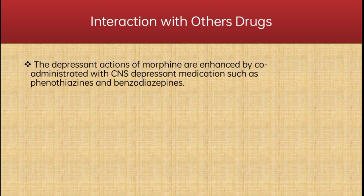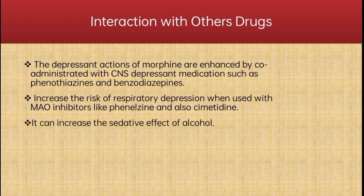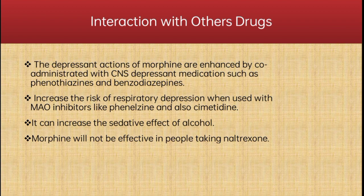Regarding drug interactions with morphine: these are rare, although the depressant actions of morphine are enhanced when co-administered with CNS depressant medications such as phenothiazines and benzodiazepines. It increases the risk of respiratory depression when used with MAO inhibitors like phenelzine and also cimetidine. It can also increase the sedative effect of alcohol. Morphine will not be effective in people taking naltrexone. It also antagonizes the effect of diuretics.